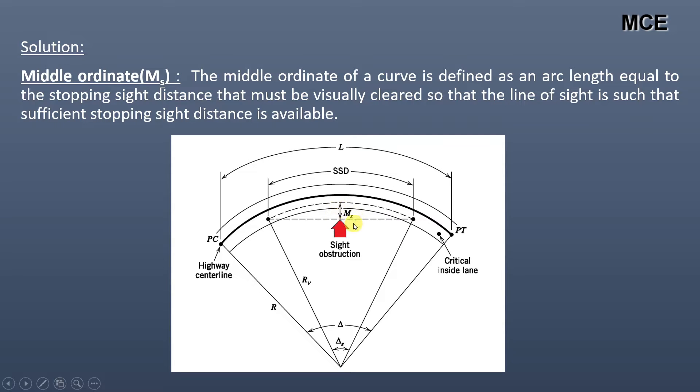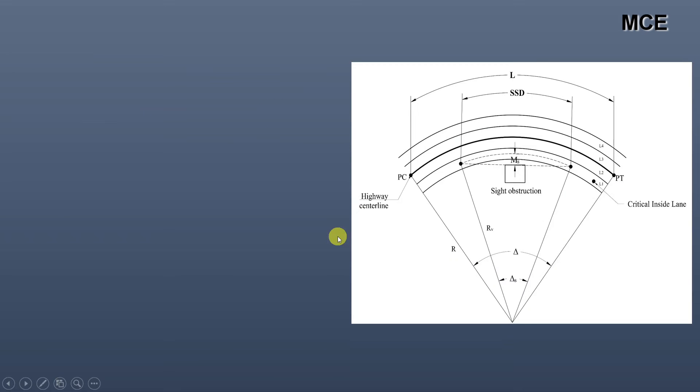So this Ms gives the middle ordinate of a horizontal curve. In our question, we have a four-lane highway and we have to calculate the middle ordinate from the centerline of the innermost lane to the side obstruction. The radius of curve is given as 2300 feet. Design speed is equal to 50 miles per hour, or 73.35 feet per second.